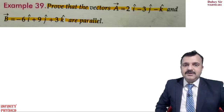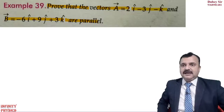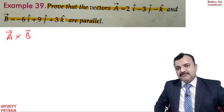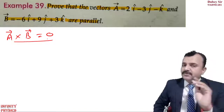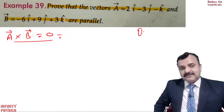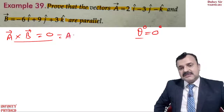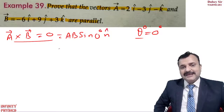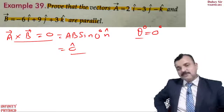First question: prove that vector A and vector B are parallel to each other. To prove they are parallel, vector A cross vector B must be equal to zero. If they are parallel, theta between them is zero degrees, so sin(0°) into n̂ gives the zero vector.